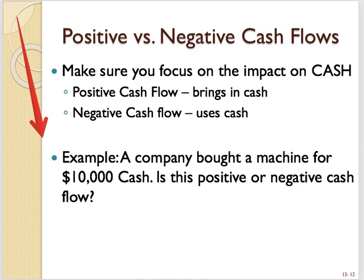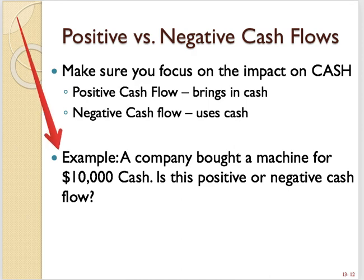The thing is, I've taught this enough to know that students sometimes get mixed up because they focus on the transaction — maybe other elements of the transaction — and they forget to focus on the cash. So let me give you an example: a company bought a machine for $10,000 cash. Is this positive or negative cash flow?